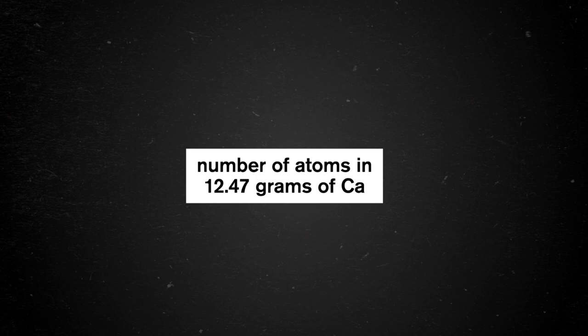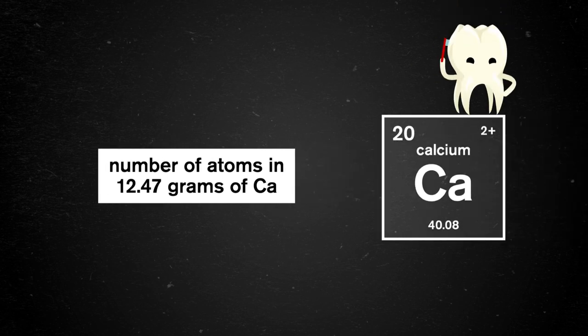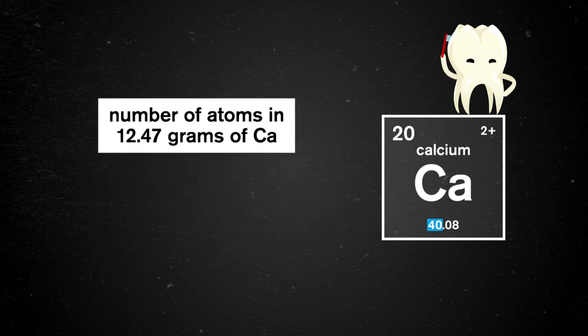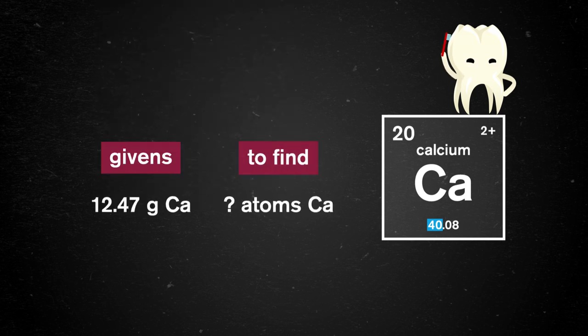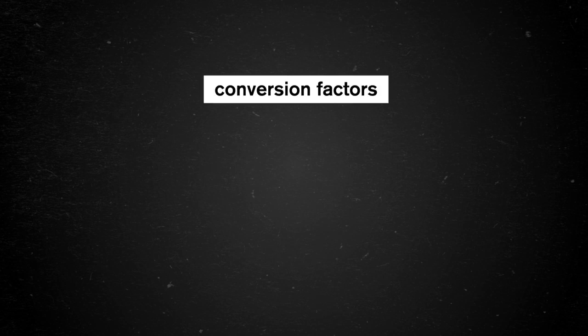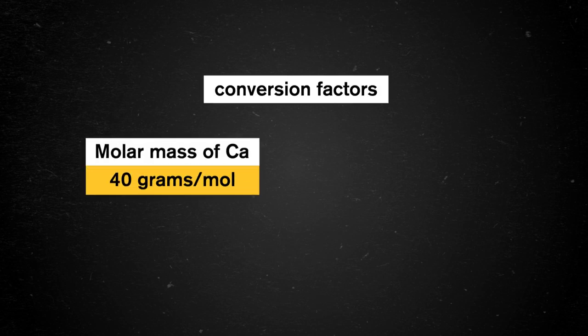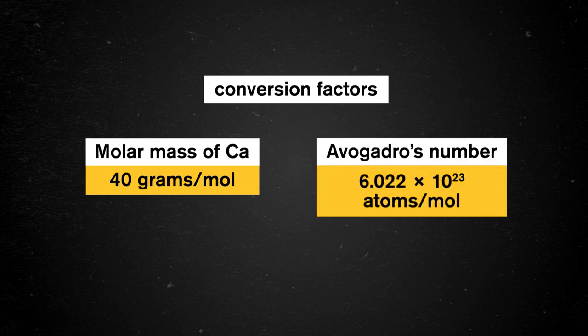The key to working with these more involved conversions is keeping our units straight. Instead of writing out the full equation altogether, another method could be to write out the units first and fill the numbers in afterwards. If we were to try to find the number of atoms in 12.47 grams of calcium, we could use this technique to make our process a little easier. Calcium is a great element to practice with since its molar mass is a nice round number, and since it's one of the most abundant elements, it shows up in a lot of places — including exams. Our given here is in grams and we need to find the amount in atoms, so we need two conversion factors: the molar mass of calcium to convert from grams to moles, and Avogadro's number to convert from moles to atoms.